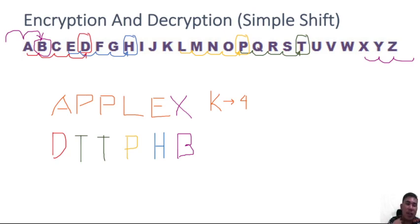So by then, you will reach letter B as the ciphertext equivalent of the plaintext letter X in APPLEX.